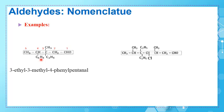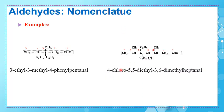Another example: to give the IUPAC name of an aldehyde, the carbonyl carbon always gets number 1. Following the numbering, the name is 4-chloro — chloro starts with C, so alphabetically it comes first — 5,5-diethyl — there are two ethyl groups on carbon 5 — 3,6-dimethylheptanal, with methyl groups on carbons 3 and 6.